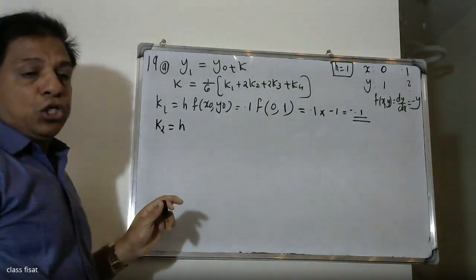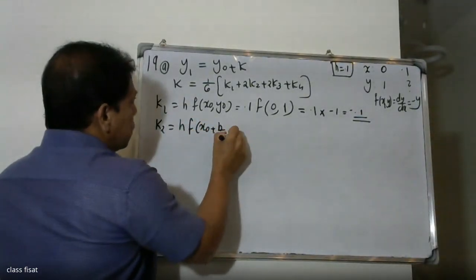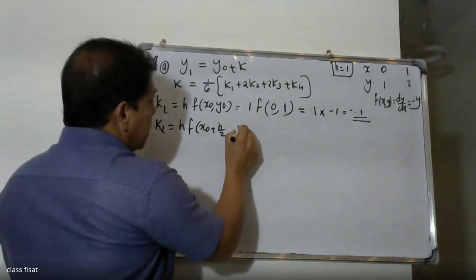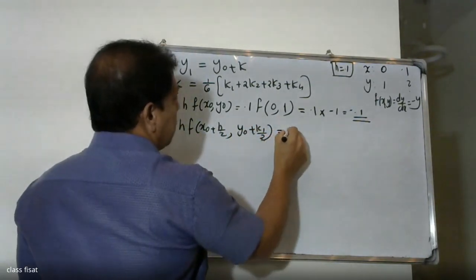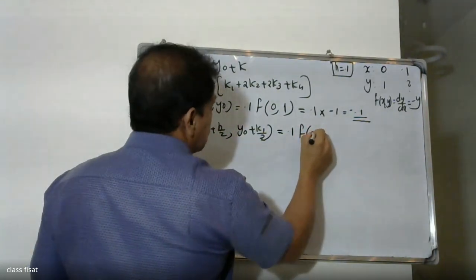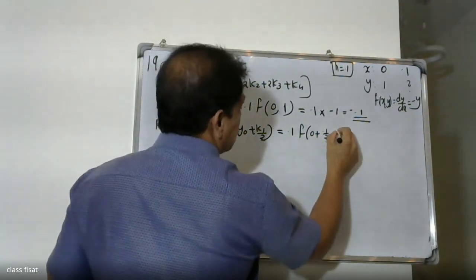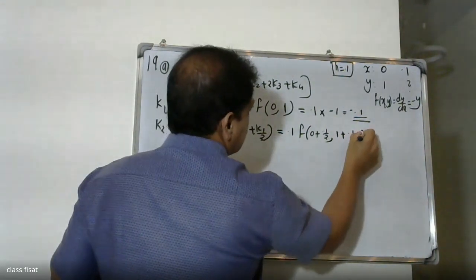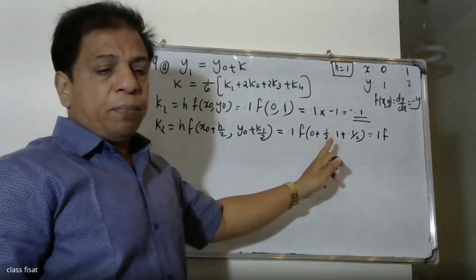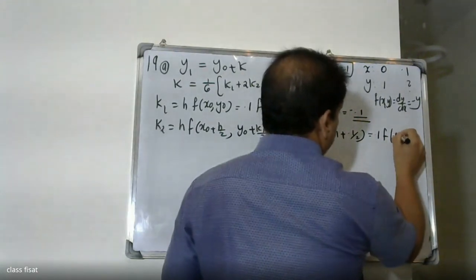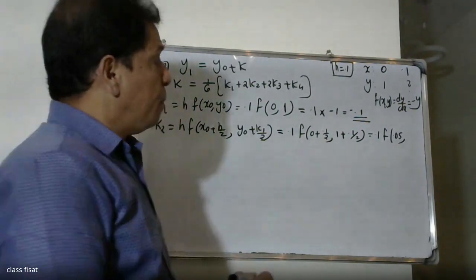K2 uses the formula: k2 = h · f(x0 + h/2, y0 + k1/2). That is 0.1 · f(0 + 0.1/2, 1 + (-0.1)/2) = 0.1 · f(0.05, 0.95). Since f(x,y) = -y, this gives 0.1 · (-0.95) = -0.095. So k2 = -0.095.